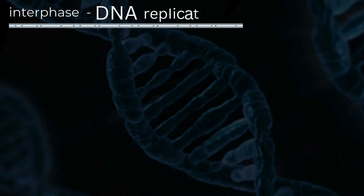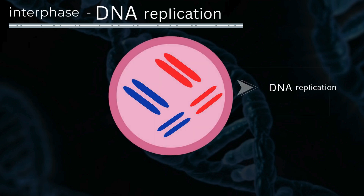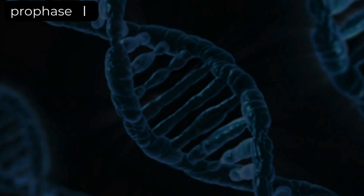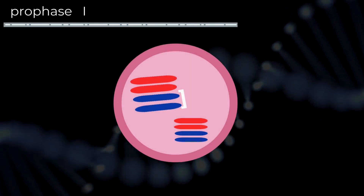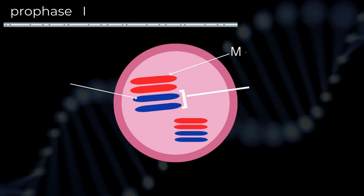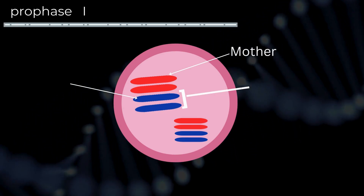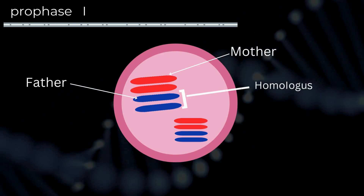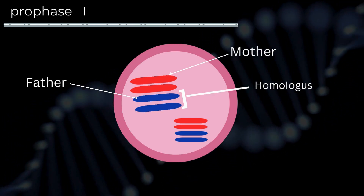As always, cellular divisions start with a process called DNA replication, which involves making two identical copies of the original DNA molecule. The cell ends up temporarily with double the number of chromosomes. In Prophase 1, the duplicated chromosomes join up with the pair from the other parent — so the mother's pair binds with the father's pair — forming a group of two chromosomes called homologous chromosomes.